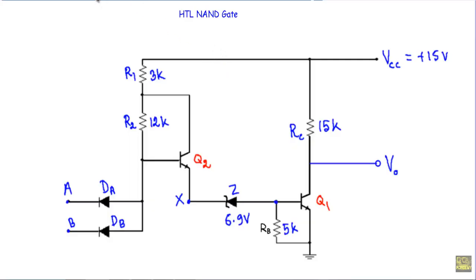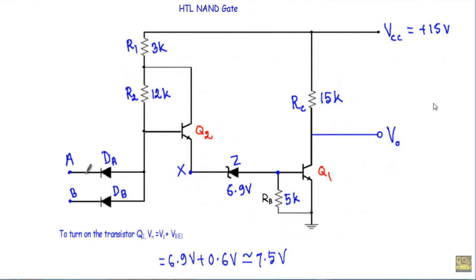In this video I will show you the operation of HTL NAND gate. This is the circuit structure of HTL NAND gate. We will supply the circuit with a 15V source and we have increased the value of resistors so that the same amount of current flows through both paths as in a DTL NAND gate. Here, instead of diodes D3 and D4, I have connected a 6.9V Zener diode. We are taking the output across this terminal to the ground terminal, and inputs A and B are applied at the anode of diodes DA and DB respectively.